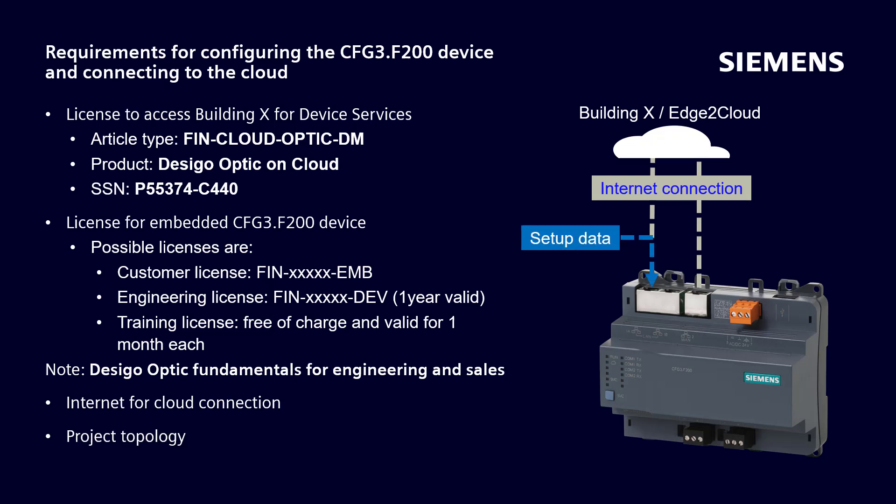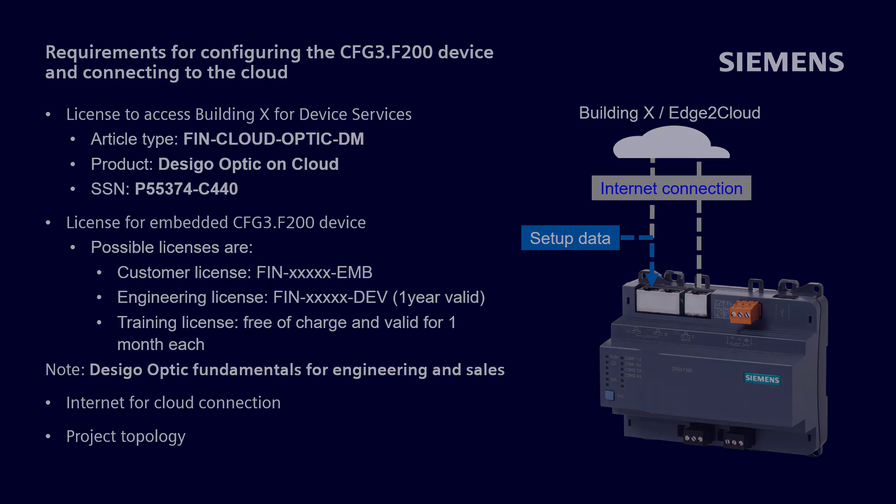A project topology contains all other information necessary to set up the device, such as addresses for the device itself and additional information to be able to set up default gateway, DNS, and proxy.